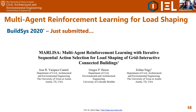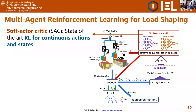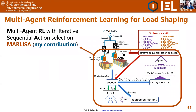We used CityLearn and implemented the RL agent to coordinate the district with nine buildings across different climate zones. The actions are to store more or less energy at different times — charging and discharging energy storage systems. The type of RL controller used is soft actor-critic, a state-of-the-art controller for problems with continuous state and action variables. We modified this controller using our own algorithm: multi-agent reinforcement learning with iterative sequential action selection.